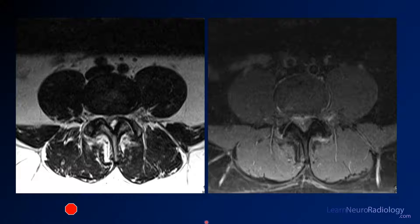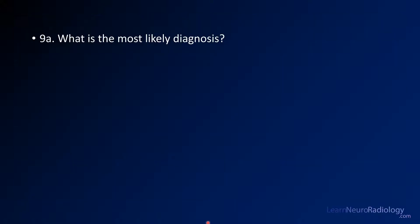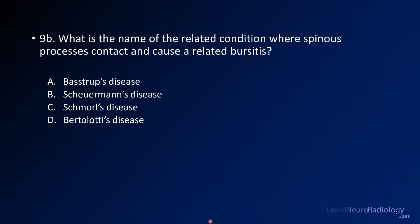So be thinking about what your diagnosis is and what's causing the abnormality. Your first question is what is the most likely diagnosis? Your second is what is the related process where the spinous processes are contacting and can cause a bursitis.